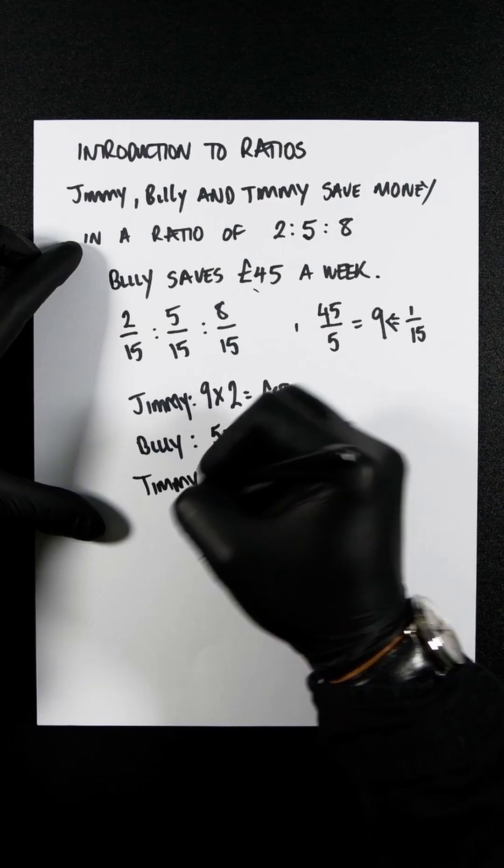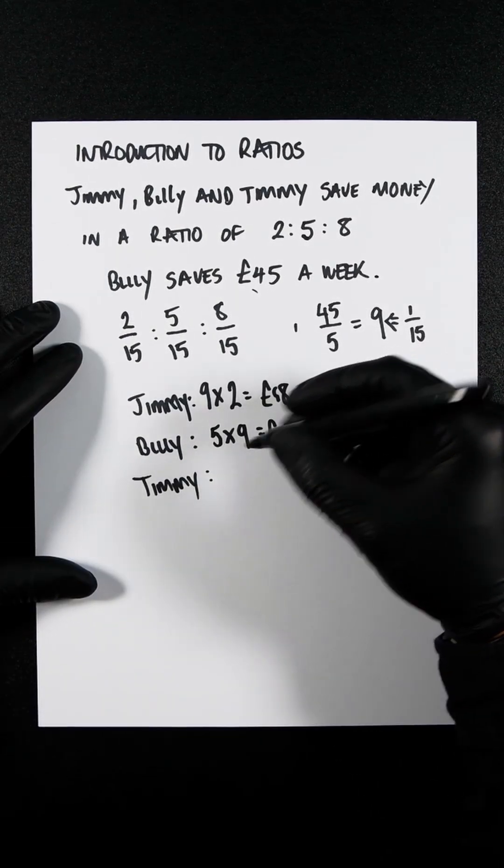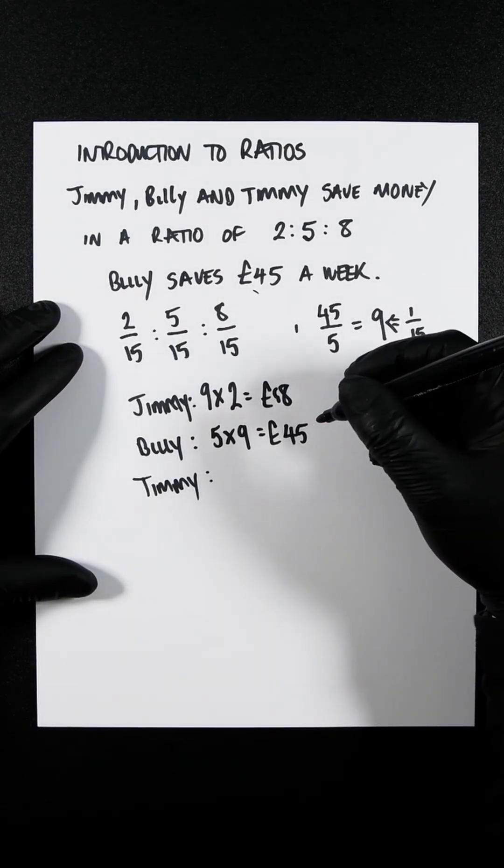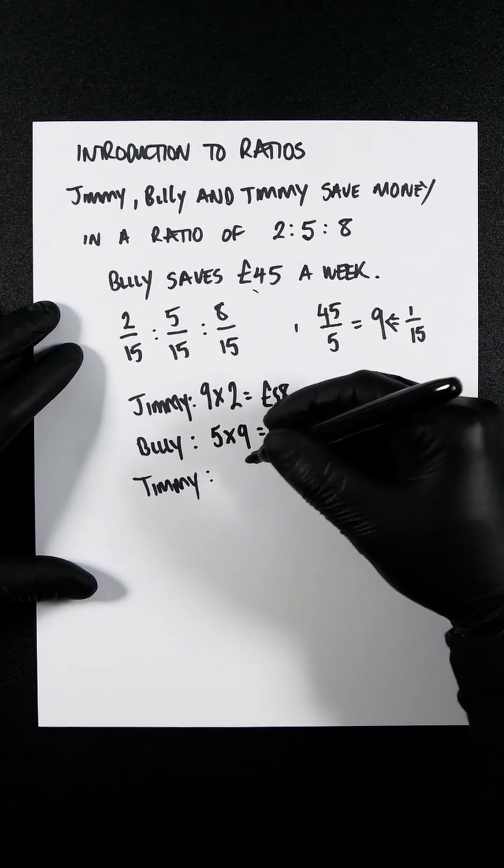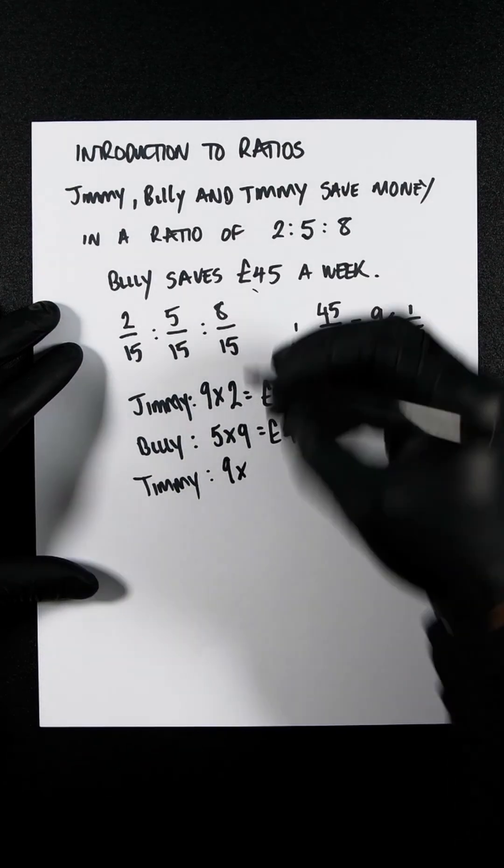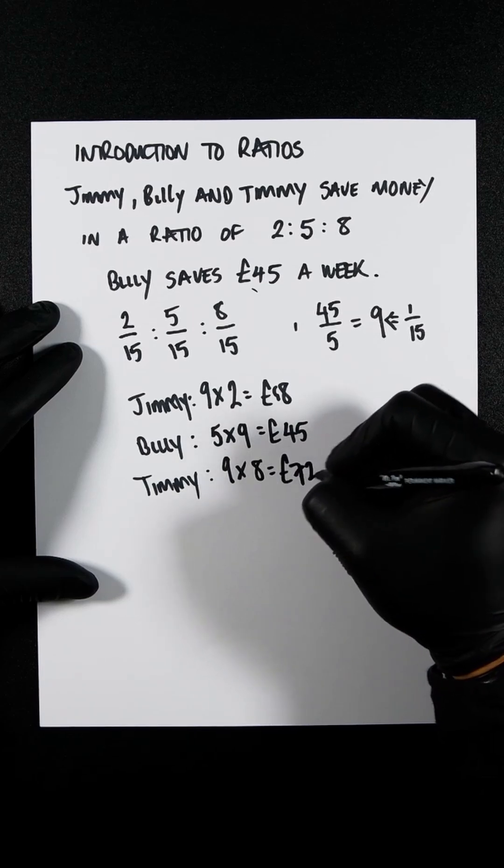And then we've got Timmy really needs to open up an investment account. Probably Hargreaves Lansdowne, the Life Strategy Vanguard Accumulator, which is 100% equity because he's got 9 times 8, that's 8 there, which is 72 pounds.